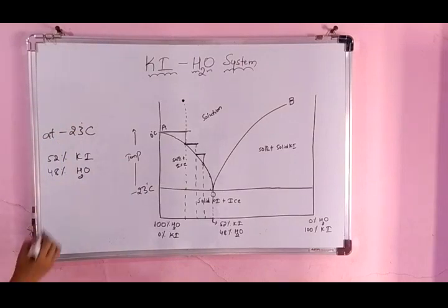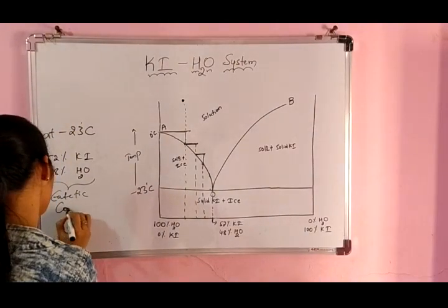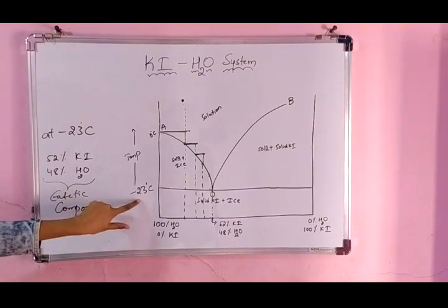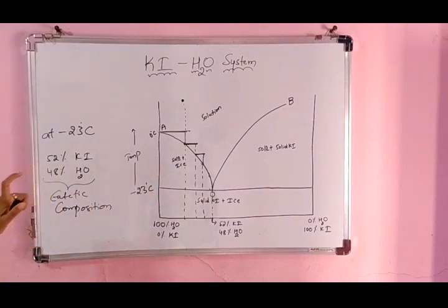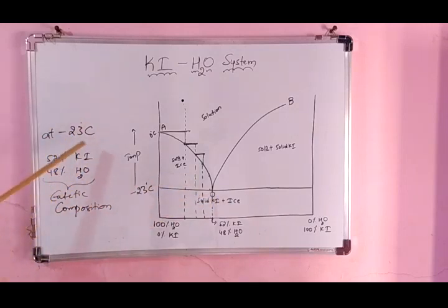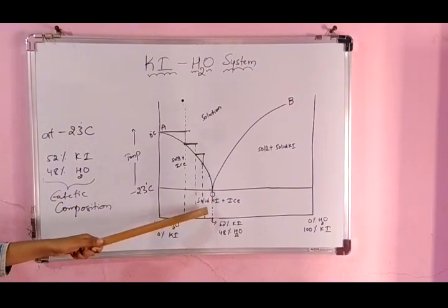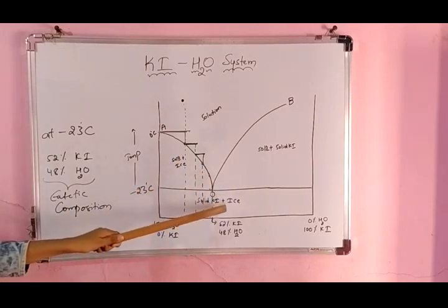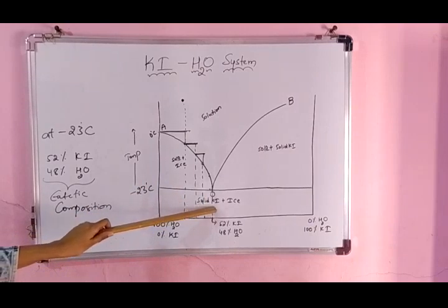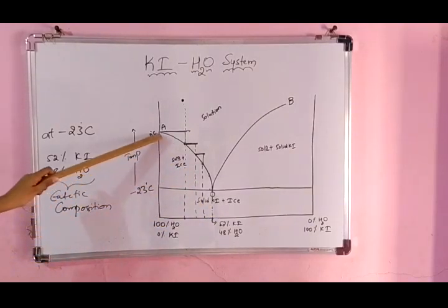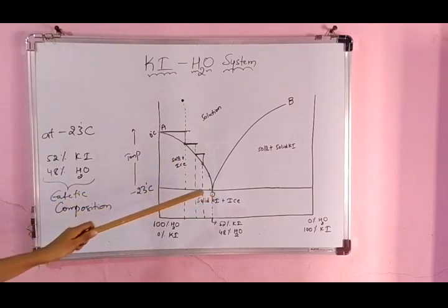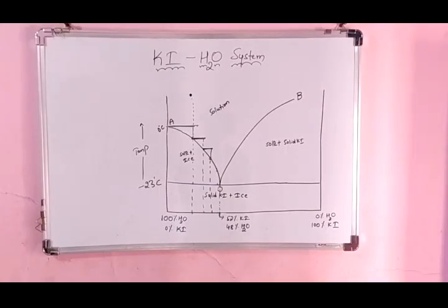So that point is called the eutectic point, observed as O. At this composition — 52% KI and 48% H2O — at minus 23°C, this is called the eutectic temperature and this is called the eutectic composition. The eutectic point is nothing but an easy melting point where both solids melt easily together. Below minus 23°C, both ice and KI remain in solid form only. Along the curve above that, only water was getting solidified, but at point O both KI and H2O solidify simultaneously.